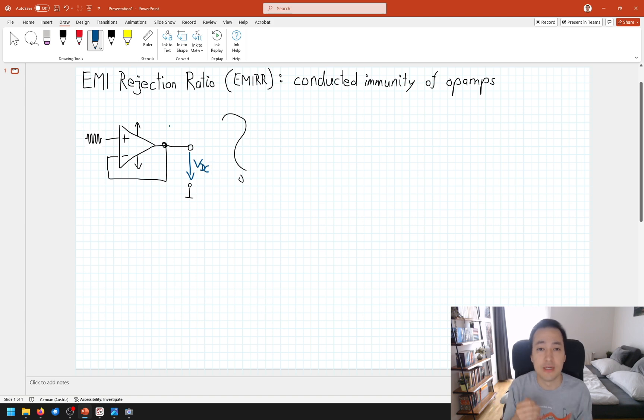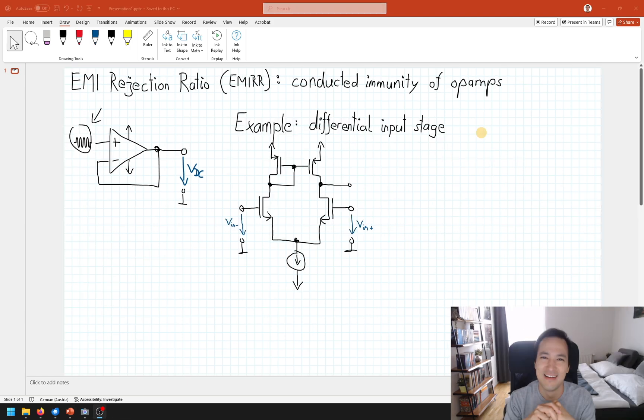Why is this the case? The easy explanation is every time if you have active components or non-linearities, you will have a rectification. Don't worry, this is not an analog IC class, but I would like to use the differential input stage of an op amp as a good example how this DC offset at the output can occur.